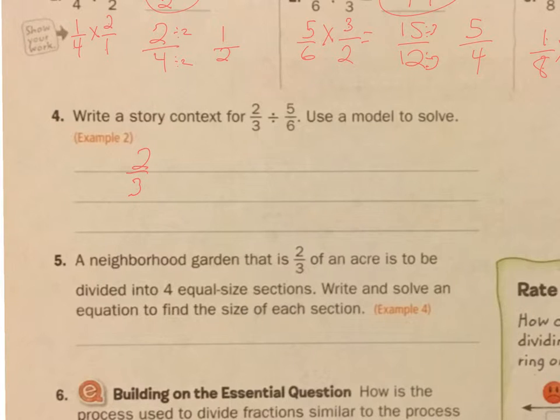2 thirds, keep that, change that, and change that. Now I see I can divide this by 3 and divide this by 3, so now I get 1 over here and I get 2 over here. 2 times 2 is 4, 1 times 5 is 5, so my answer is 4 fifths.